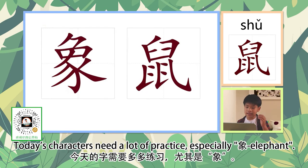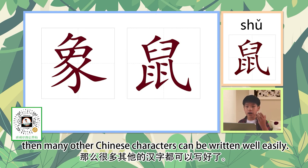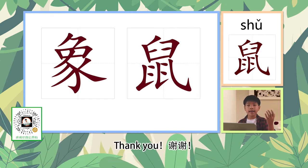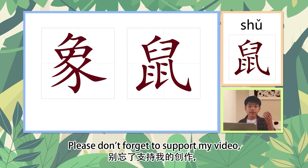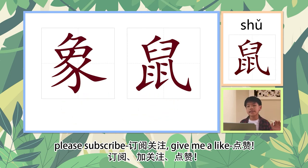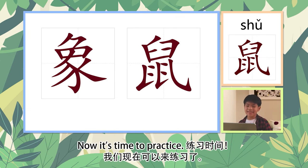Today's characters require a lot of practice, especially 象 (elephant). If you could write it well, then many other Chinese characters can be written well easily. These are the two words to learn today. Thank you. Please don't forget to support my videos — please subscribe and give me a like. Now it's time to practice!